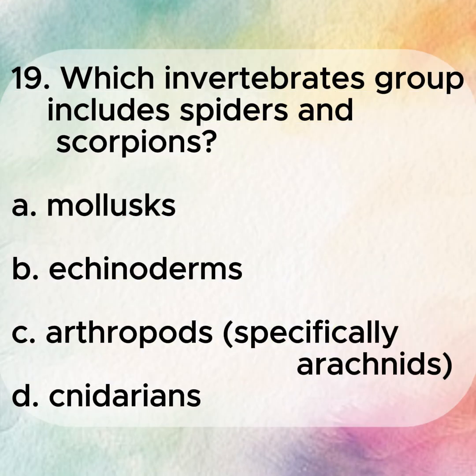19. Which invertebrate group includes spiders and scorpions? A. Mollusks. B. Echinoderms. C. Arthropods, specifically arachnids. D. Cnidarians.